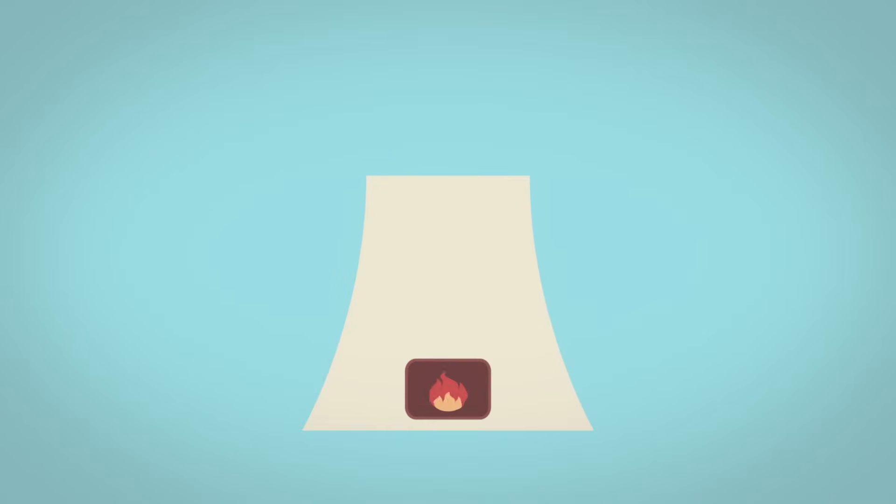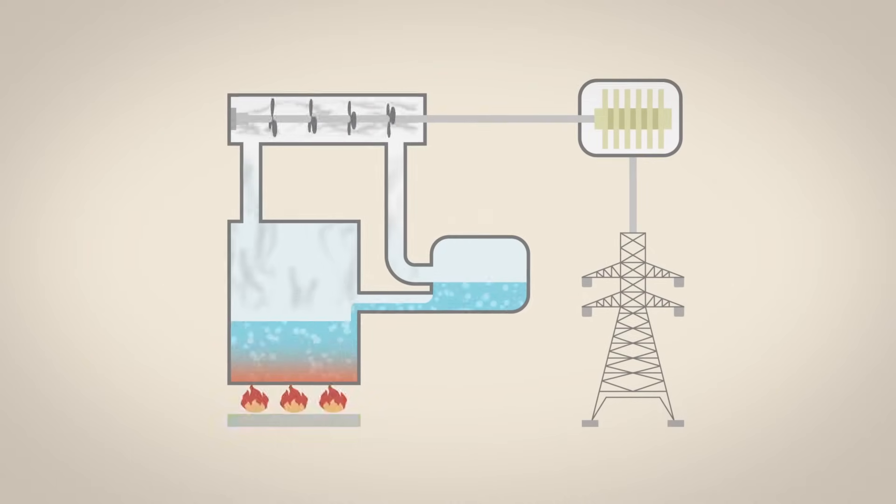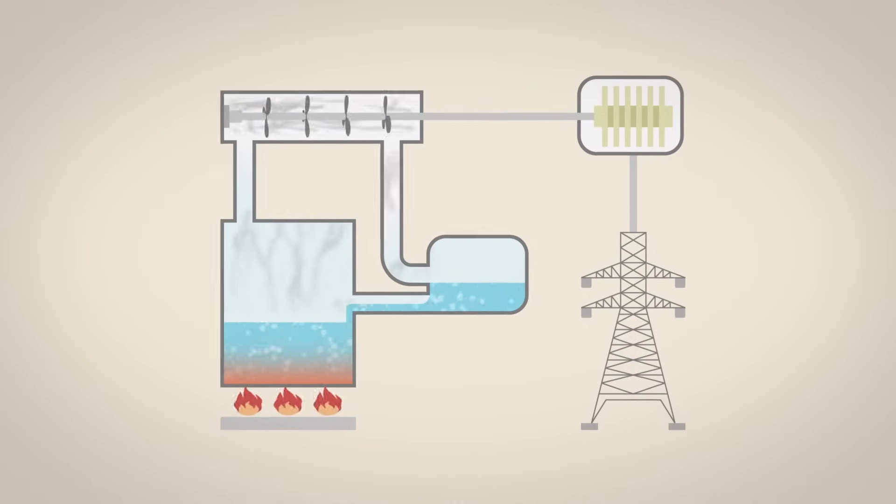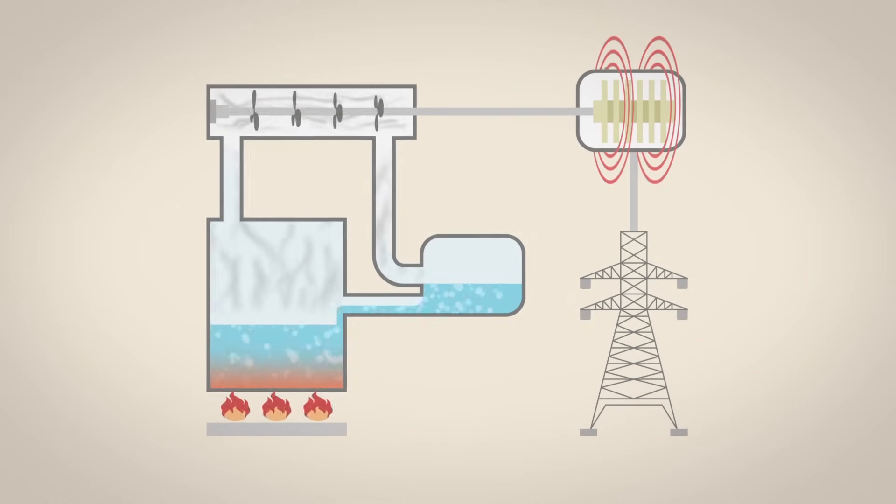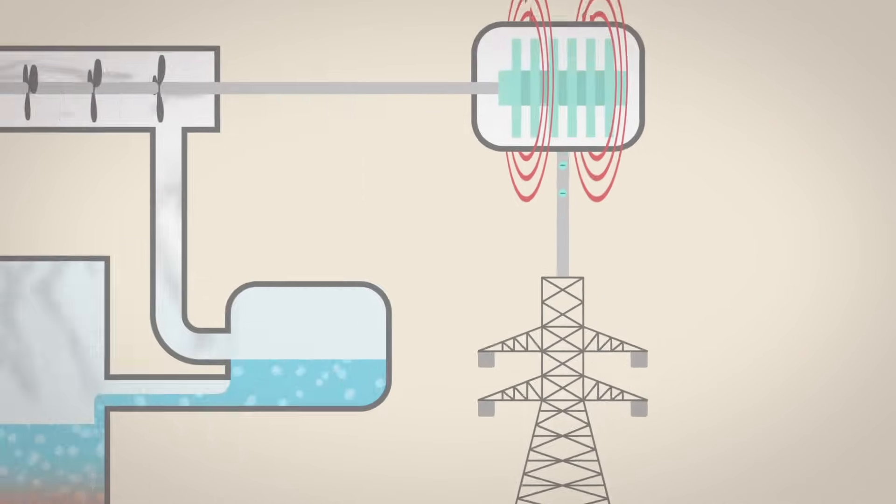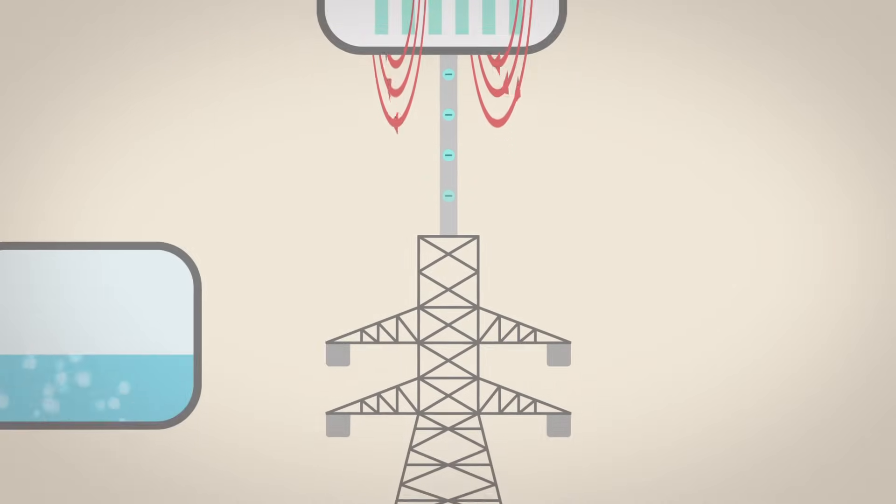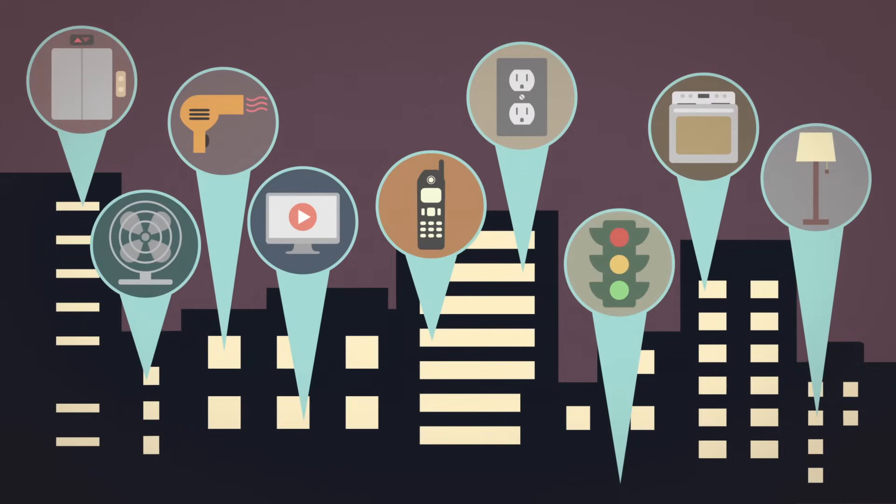When we burn fossil fuels in power plants, we release this stored energy to generate electricity. To generate electricity, heat from burning fossil fuels is used to power turbines that rotate magnets, which in turn create magnetic field changes relative to a coil of wire, causing electrons to be induced to flow in the wire. Modern civilization depends on our ability to keep powering that flow of electrons.